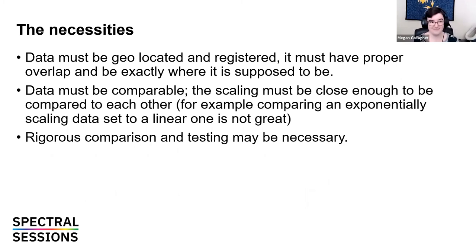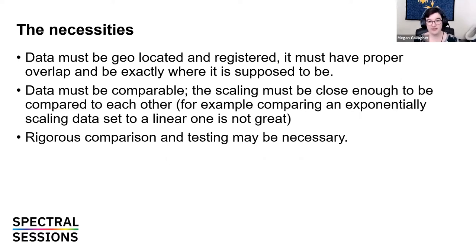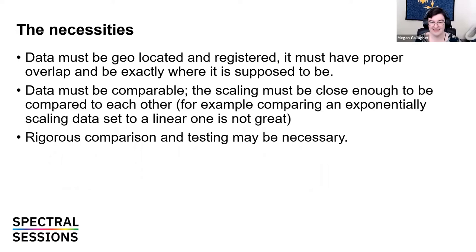If the data isn't correctly located, your results won't point out where things actually are. The next thing is that the data must be comparable — though this is true and false depending on the situation. If I'm creating a band stack for classification, my data must be comparable: the scaling must be close enough. If I had an exponentially scaling dataset and a normalized dataset between negative one and one, that won't be good for a classification technique — many algorithms will weight and scale that really badly. You might consider normalizing both, but if you're using disparate data for modeling, different kinds of scaling can sometimes be okay.